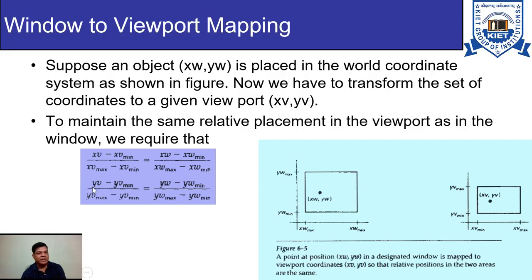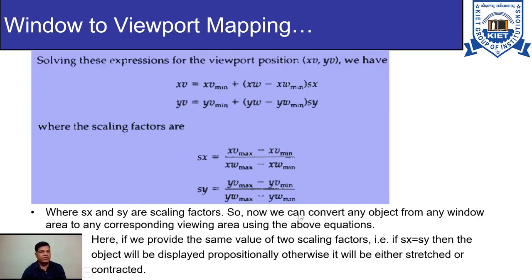Along the y-axis we have (yv − yv_min) / (yv_max − yv_min) = (yw − yw_min) / (yw_max − yw_min). To maintain the relative proportions of the picture we write this equation so that the point can be mapped onto the viewport. Solving these expressions for the viewport positions xv and yv, we find: xv = xv_min + (xw − xw_min) · sx, and yv = yv_min + (yw − yw_min) · sy.